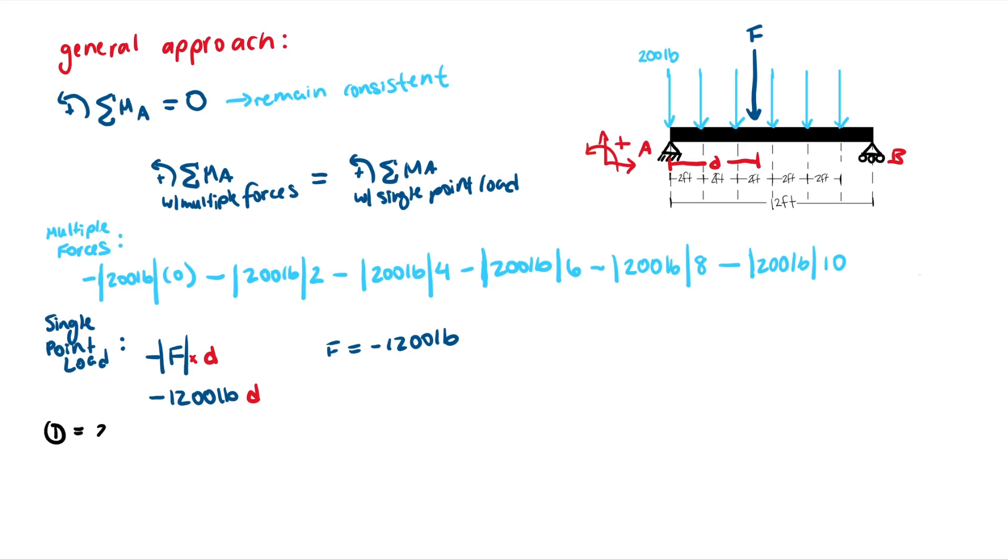Then we can simply equate these equations, as shown here, and move the 1200 to the other side. And you'll get that D is equal to five feet, which is the same answer.